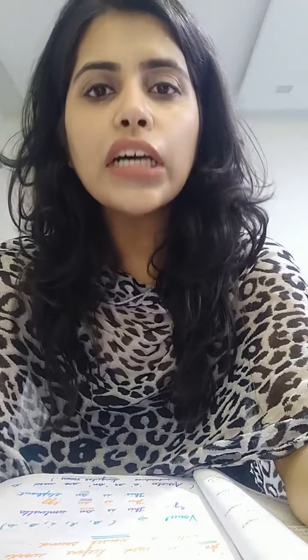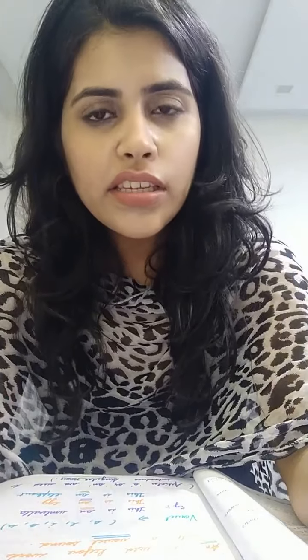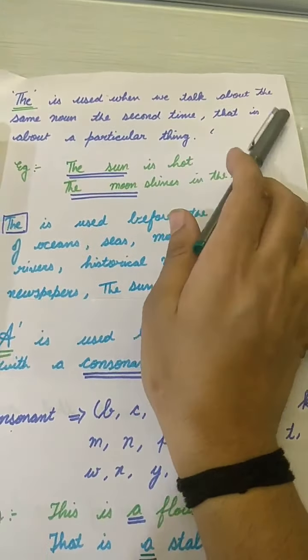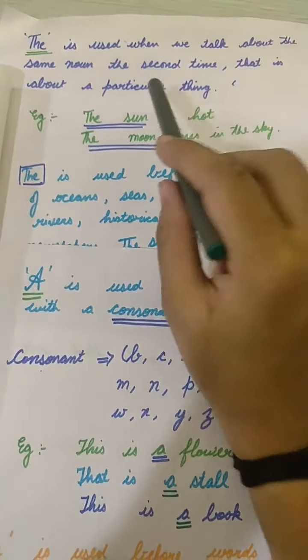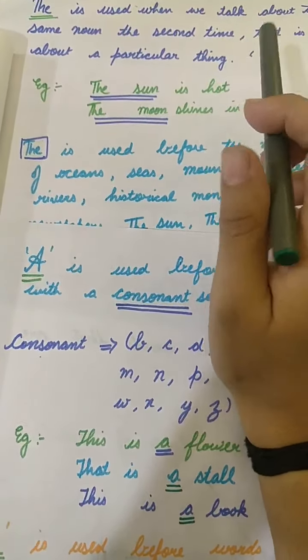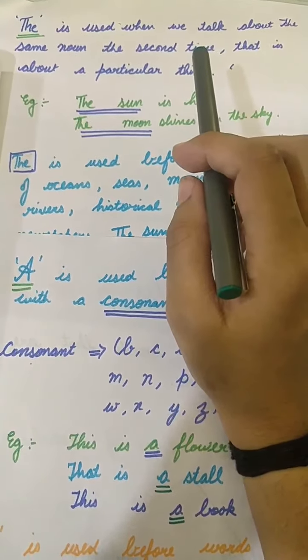Now if we talk about THE — THE is used with a specific thing, meaning a thing that is clear to us. It is also used when a word is repeated for the second time. So instead of A or AN, we use THE when we refer to the same noun the second time, that is about a particular thing. Then we use THE. But if we talk about something for the first time, we use A or AN according to the consonant or vowel sound.